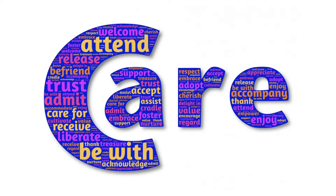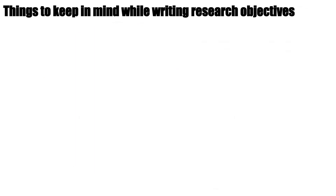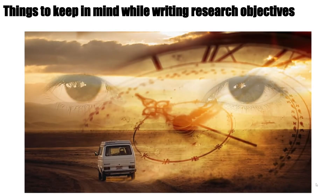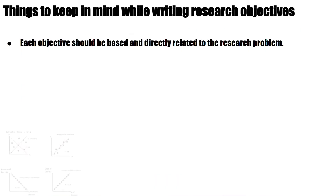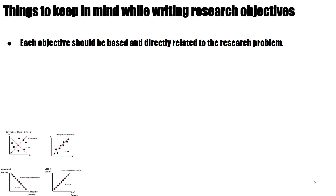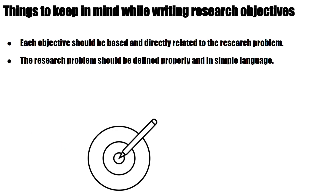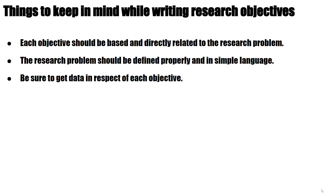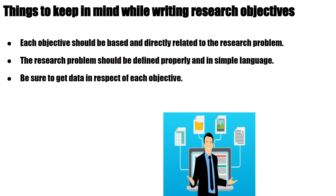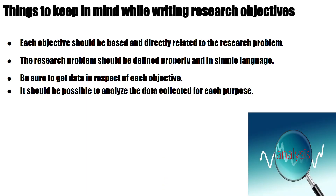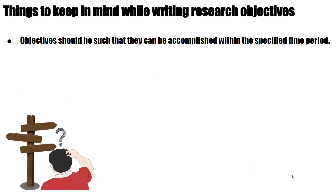The researcher has to take special care when determining the objectives of the research. Some points should be kept in mind while making decisions to make the research objectives concrete and clearly realizable. Each objective should be directly related to the research problem. The research problem should be defined properly and in simple language. Be sure to get data in respect of each objective. It should be possible to analyze the data collected for each purpose.